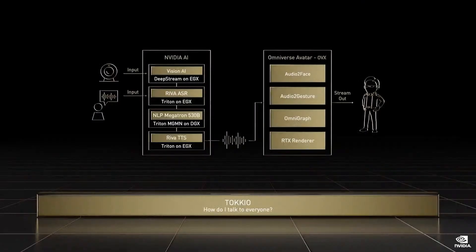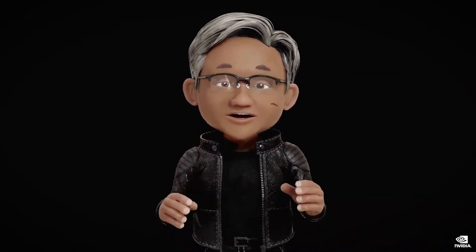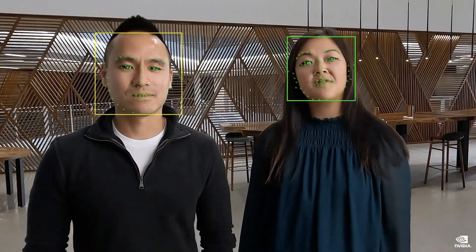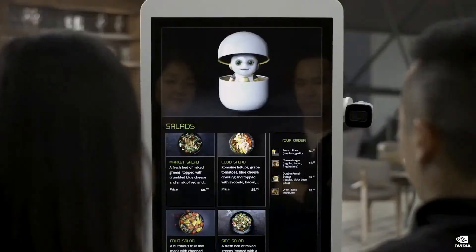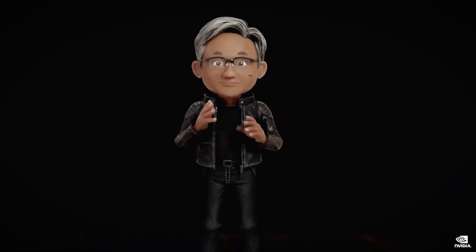Finally, I can listen and talk to you thanks to the latest in conversational AI technologies from Riva, and our Megatron 530 billion parameter NLP model, one of the largest language models ever trained. Megatron helps me answer all those tough questions Jensen throws at me. I can be run from the cloud, the data center, or any other disaggregated system. Tokyo is an application built with Omniverse Avatar, and it brings customer service AI to retail stores, quick service restaurants, and even the web. It comes to life using NVIDIA AI models and technology, like Computer Vision, Riva Speech AI, and NVIDIA NeMo.